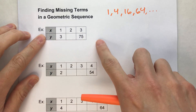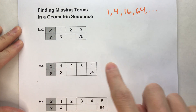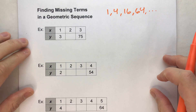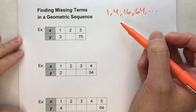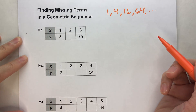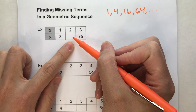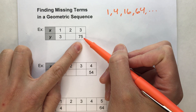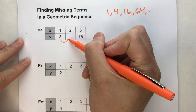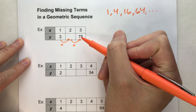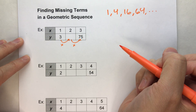In today's examples, I'm giving you a geometric sequence but leaving out some of the terms in the middle, and we're going to figure out what those missing terms are. Because we know we're repeatedly multiplying by the same number, we can figure it out. In this first example, our first number is 3, we don't know the second term, but we know the third term is 75.